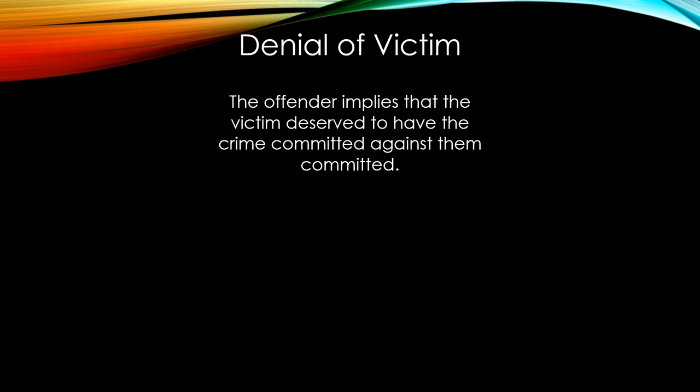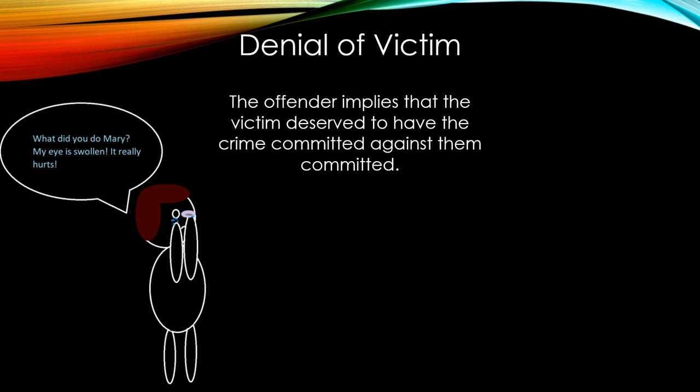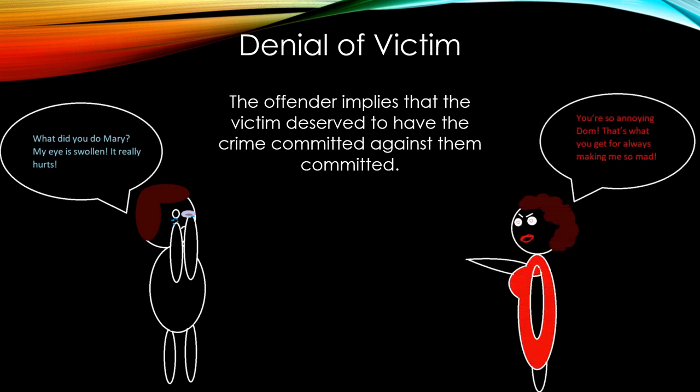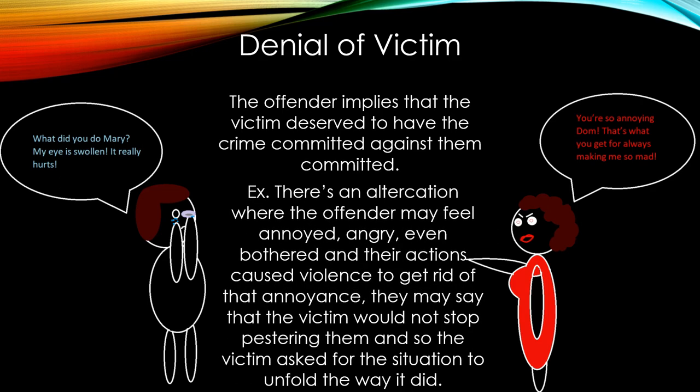Denial of victim is where the offender implies that the victim deserved to have the crime committed against them. In the example, Mary hits Dom, saying: 'That's what you get for always making me so mad.' The offender feels annoyed or angry, and their actions caused violence to address that annoyance. They claim the victim would not stop pestering them, and so the victim brought the situation upon themselves.